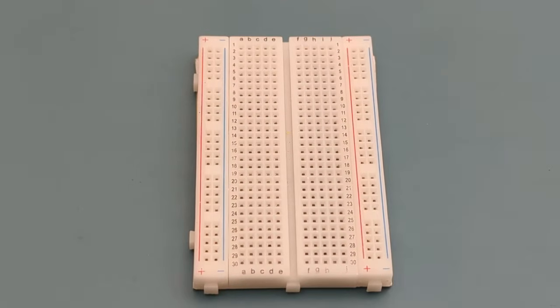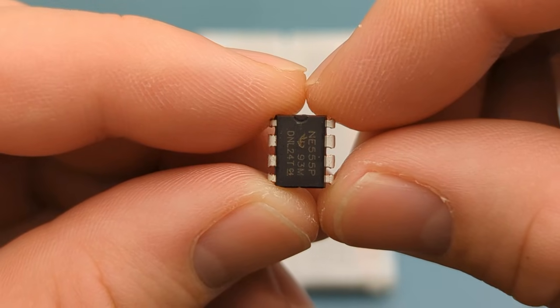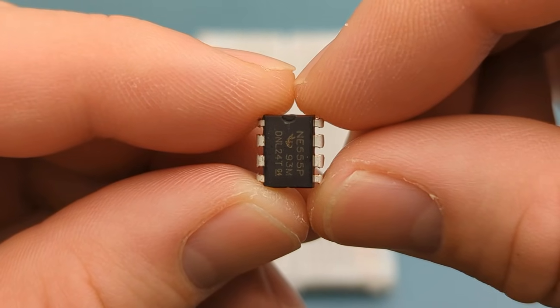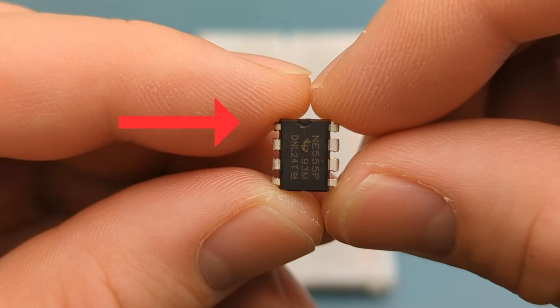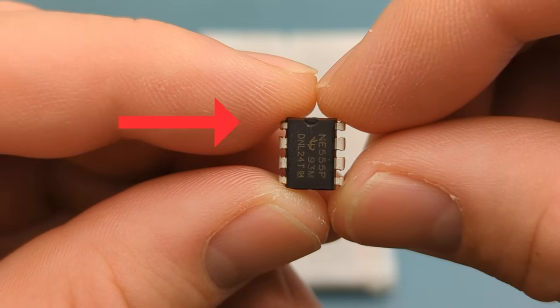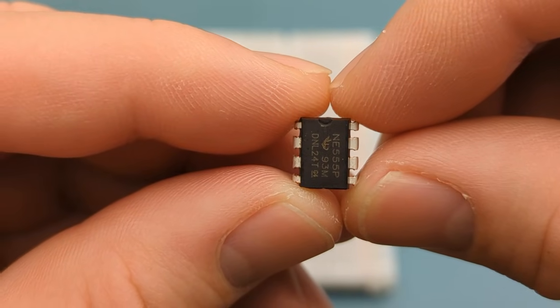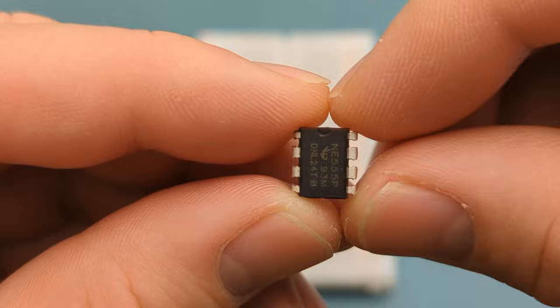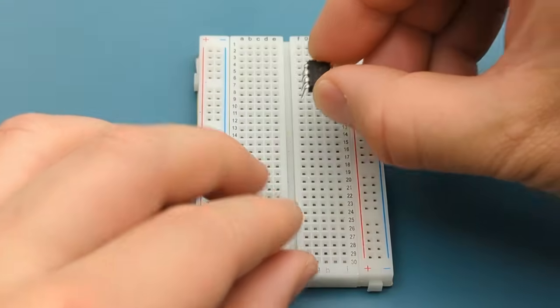Let's set up the circuit step-by-step. Begin by positioning the 555 timer IC on the breadboard. The pins are numbered counterclockwise, starting from the top left corner. Refer to the circuit diagram if you have questions about the circuit connections. Insert the 555 timer in the middle of the breadboard.